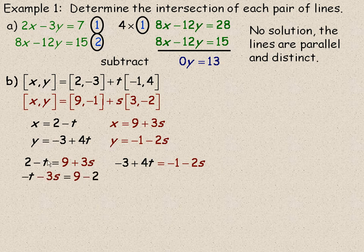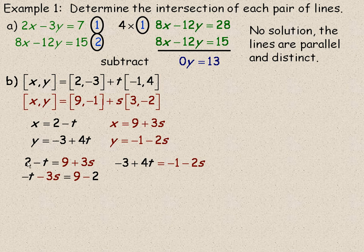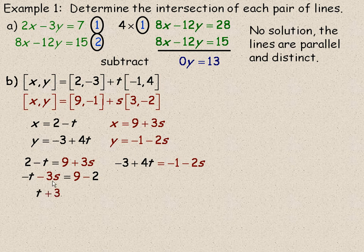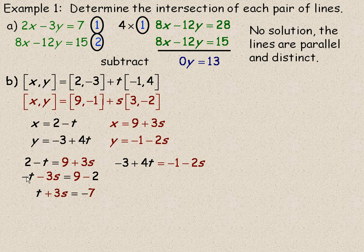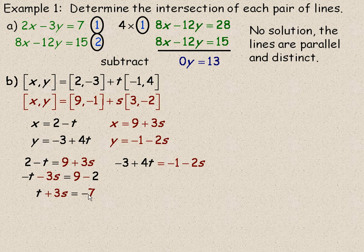So I am going to subtract 3s from both sides or bring the 3s over, bring the 2 over here or subtract 2 from both sides. Notice that the negative t and the negative 3s are both negative and I like to have the leading coefficient positive. So I am going to multiply everything by negative 1. And so that is why that turns into t plus 3s and 9 minus 2 is negative 7, so when we multiply by negative 1 we get negative 7 here.